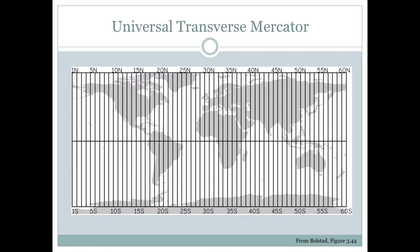And if we do this enough — if we take that cylinder and keep rotating it around the globe so that each time it's touching a line of longitude six degrees different than the last time — we would be able to create all 60 of these Universal Transverse Mercator map projections for the world. We can see it's divided from zone 1 north through 60 north, each one six degrees wide, covering all 360 degrees of longitude.